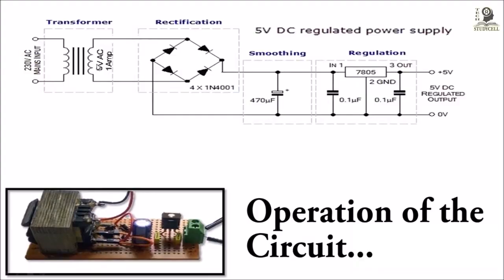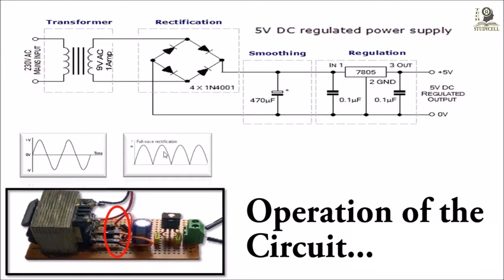In this project, first we will step down the main AC supply to 9V AC using a step-down transformer. Then we will use a diode bridge to rectify the AC into DC.